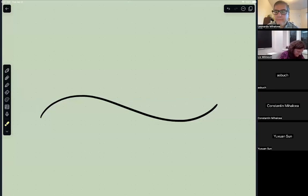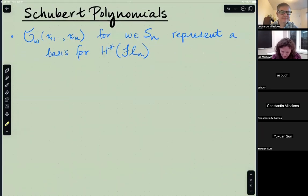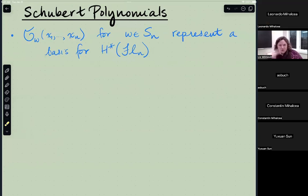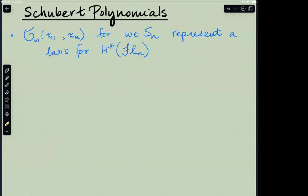Welcome back to the second half of Liz Milicevic's talk. Switching gears seemingly completely for the second half, I'll tell you about Schubert polynomials and a particular model for their monomials, which will then be equipped with a Demazure crystal structure, hopefully by the end.